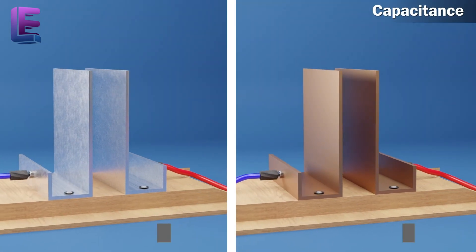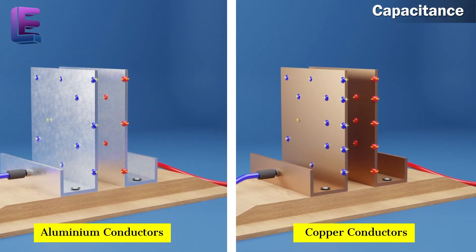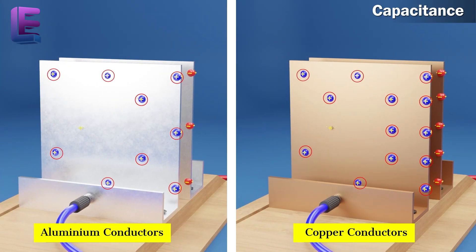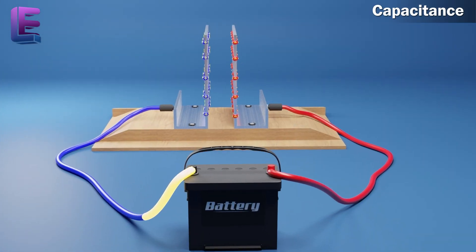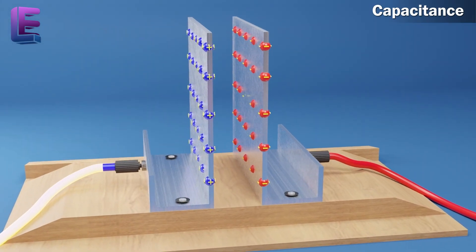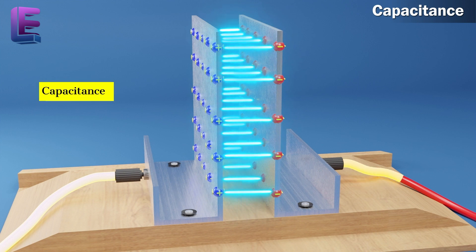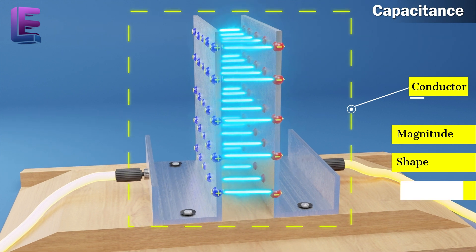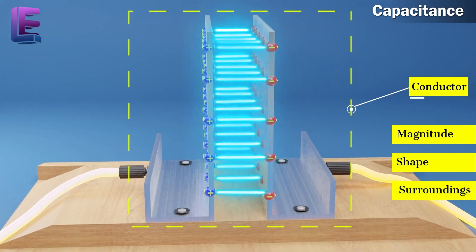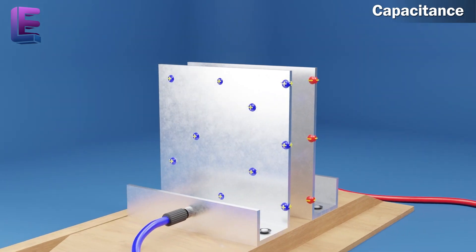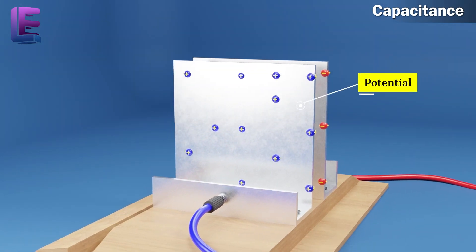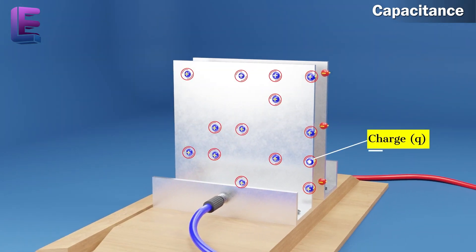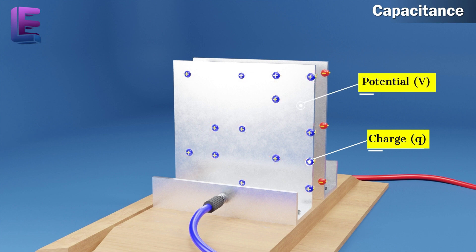Capacitance. Two conductors at different potentials have different capacities to hold charge. Capacitance is the capacity of a conductor to hold electric potential. Capacitance depends on the magnitude, shape, and surroundings of a conductor. If the charge on a conductor is increased, its potential increases too. Its charge, Q, is directly proportional to its potential, V.